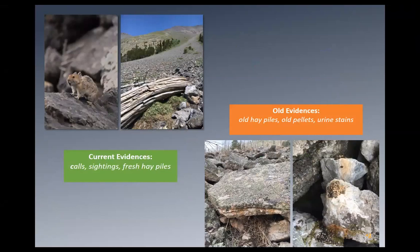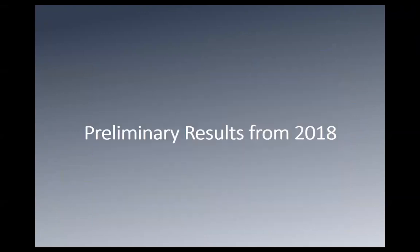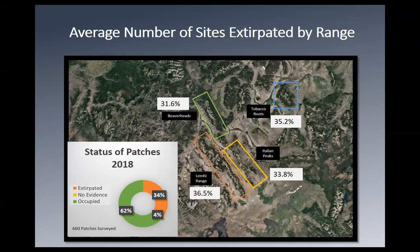Getting into some preliminary results: we had about 660 sites surveyed in 2018 alone. About two-thirds were still occupied; one-third was already extirpated, which was surprising. About 4% — roughly 17 patches — had no evidence at all. Surprisingly, about one-third in each mountain range was already extirpated or no longer occupied. We figured we would have had quite a bit more in the Lemhis and less in the Tobacco Roots due to differences in temperature and climate.